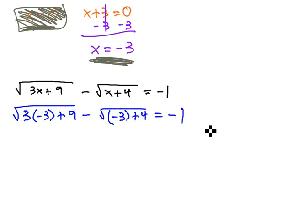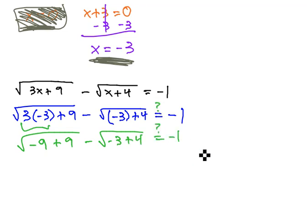Hopefully, that will equal negative 1. Let's start working it out by multiplying. It gives us the square root of negative 9 plus 9 minus the square root of negative 3 plus 4. Hopefully, that will equal negative 1.